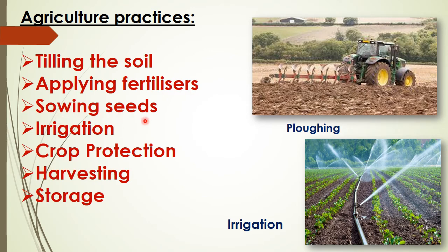Next is sowing seeds — seeds must be sown at the proper time and at a proper distance. Next is irrigation — water is very important for plant growth, and irrigation is the process by which sufficient water is supplied to crop plants. Then crop protection — when seeds germinate and new plants come out, it is necessary to protect them from pests, disease, and weeds. Pests are organisms that destroy crops or spread disease. Weeds are unwanted plants, and weeding is done by pulling them out with a hoe or a harrow.